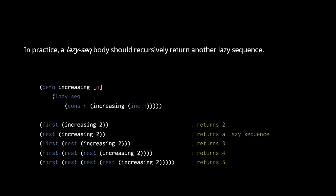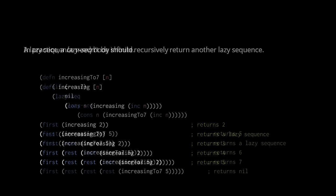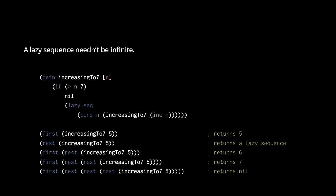If we want lazySeq to return a finite sequence, we simply add a terminating condition to our recursive function, such that at some point the function returns nil instead of another lazySeq or cons. Here, in this function increasing to 7, when the argument is greater than 7, the function returns nil, so the lazySeq created by the function terminates with the value 7.